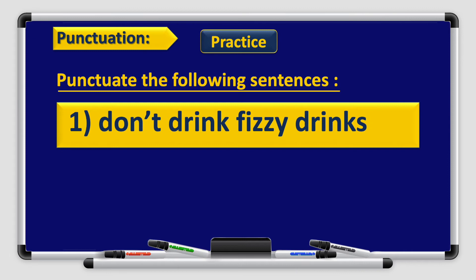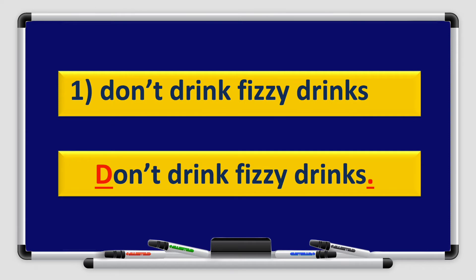Let's practice together — punctuate the following sentences. First: Don't drink fizzy drinks. The first letter D is capitalized because it's the beginning of the sentence. At the end, we add a full stop. Don't drink fizzy drinks.